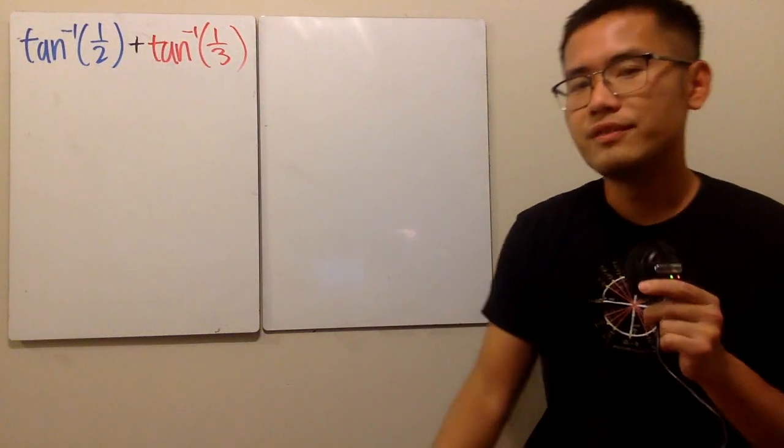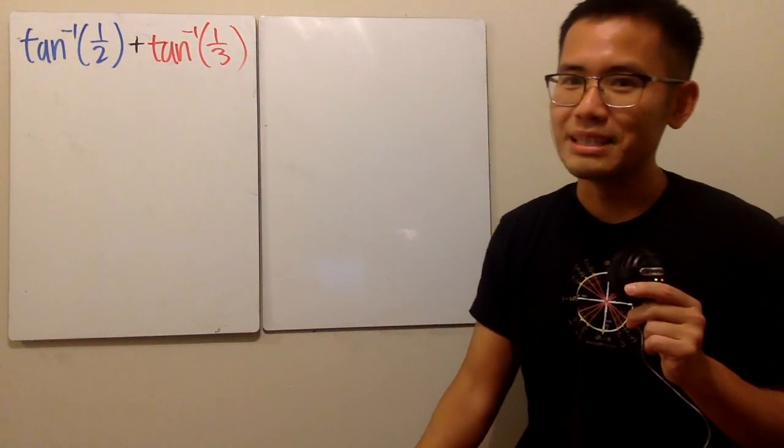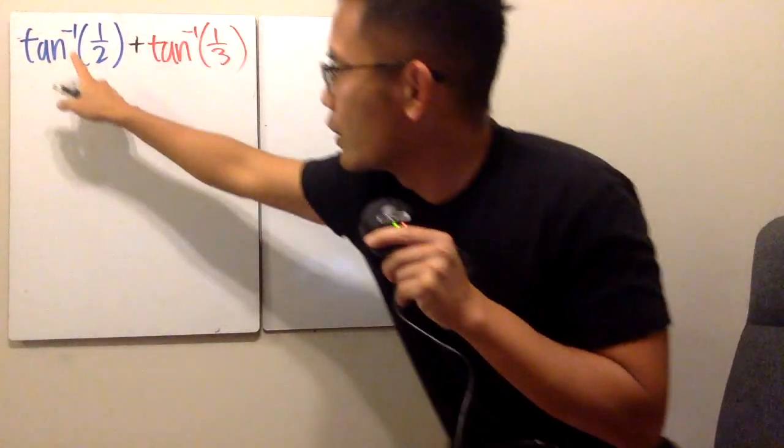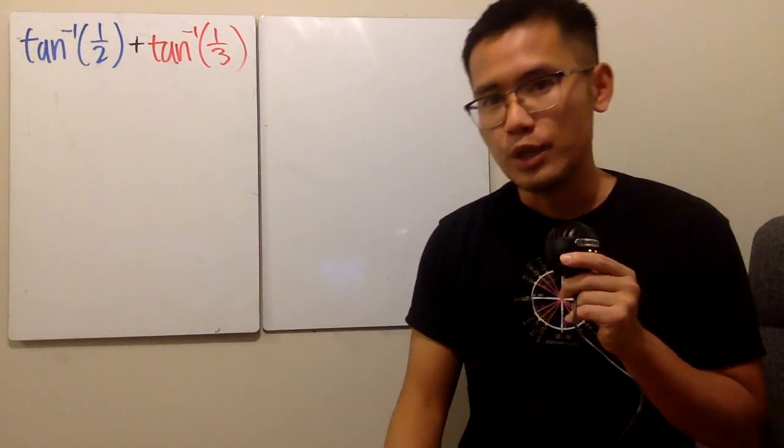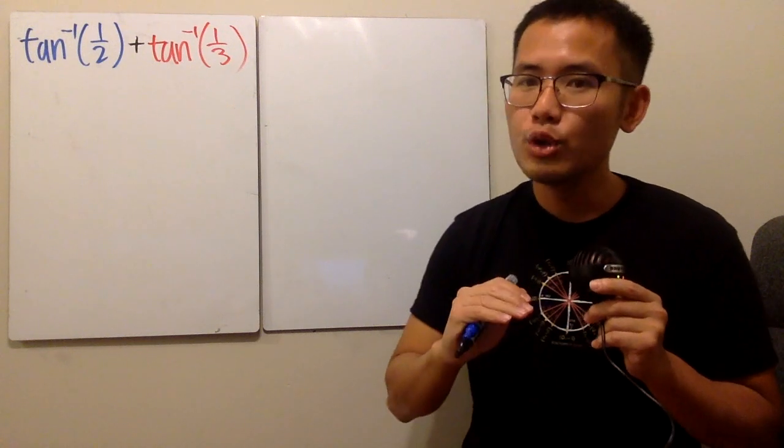All right, I will show you guys two ways to do this. First with geometry, the second with complex numbers. Here we go with the first way. Have a look, we have the inverse tangent of 1 half. And as we all know, the original tangent is what? Opposite over adjacent.